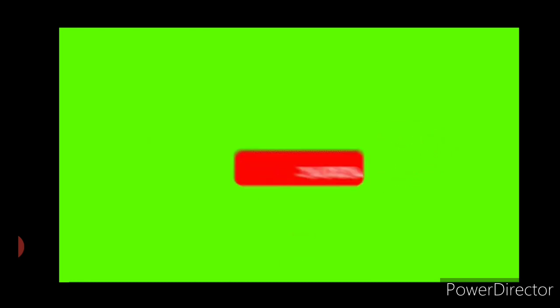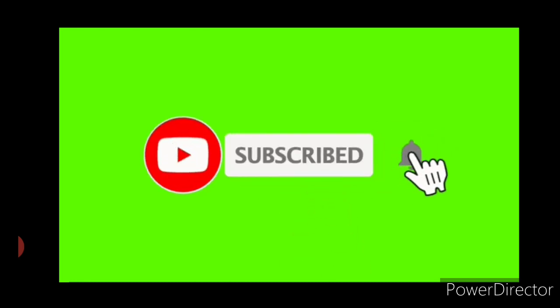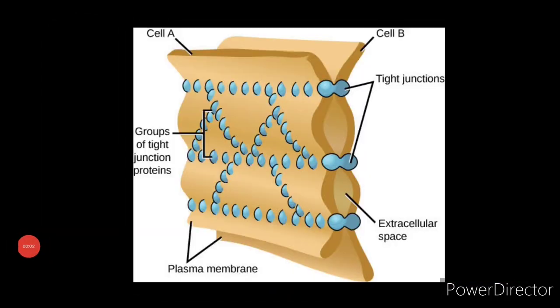Now let us continue with the remaining part of the video. Tight junctions, which are also called zona occludens or occluding junctions, are specialized structures at the plasma membrane that link adjacent epithelial cells.